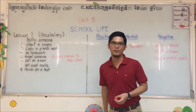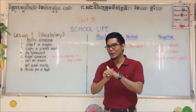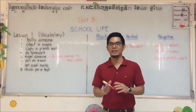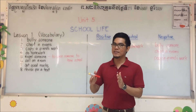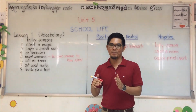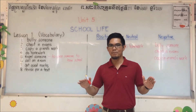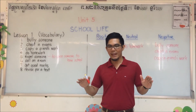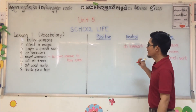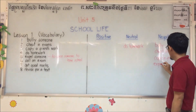Number five: expel someone. This is really bad. We don't want this to happen to any of our students — to be forced to leave school, that's terrible. But we have to learn this so we can avoid it. So we'll put expel someone in the negative.